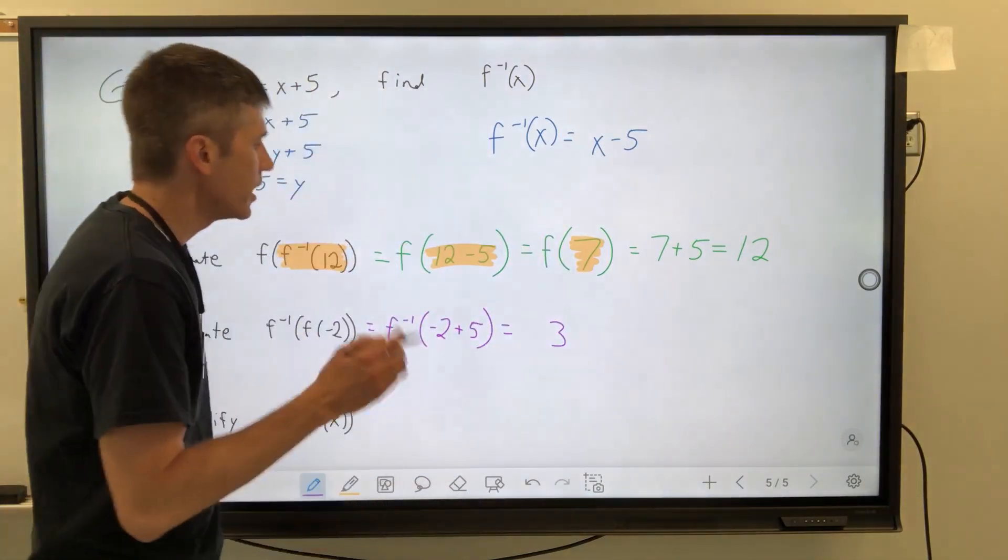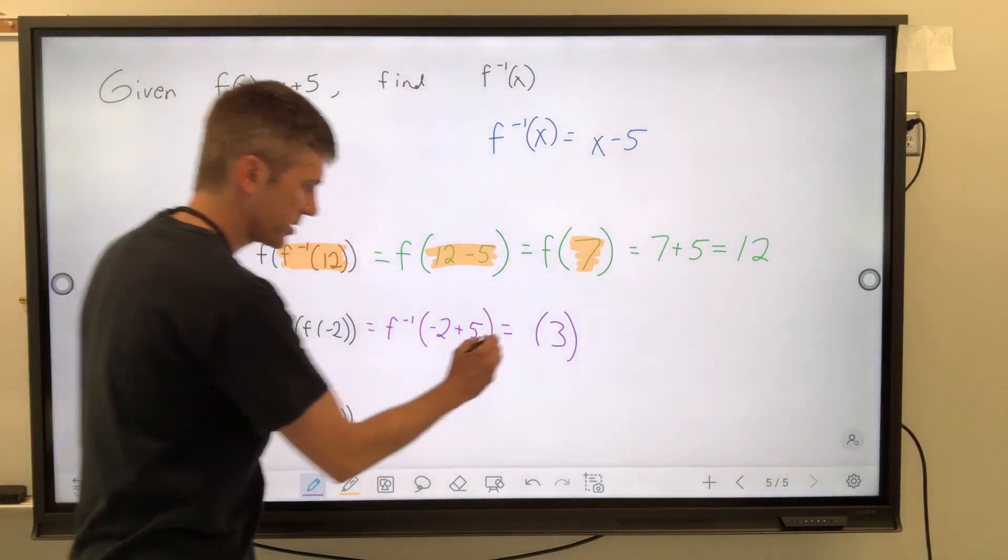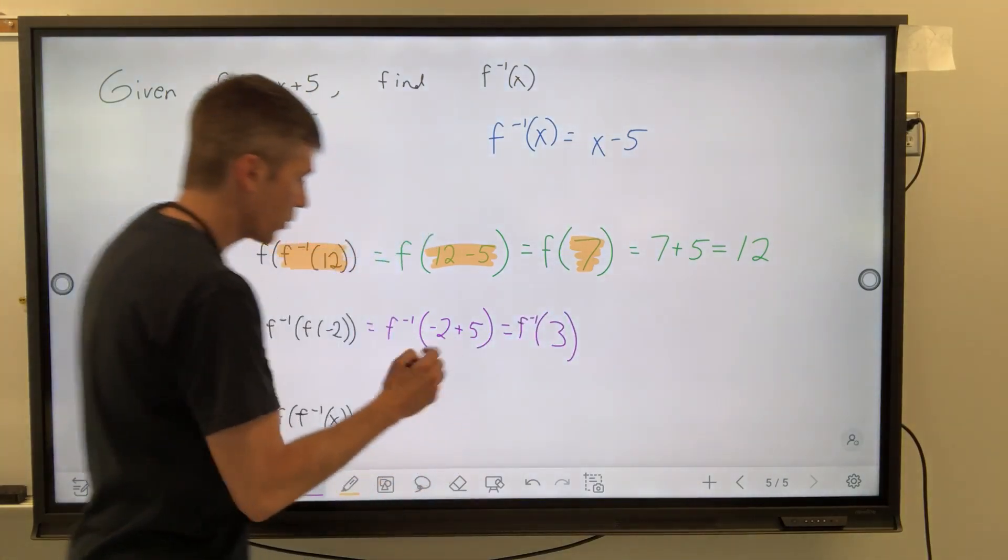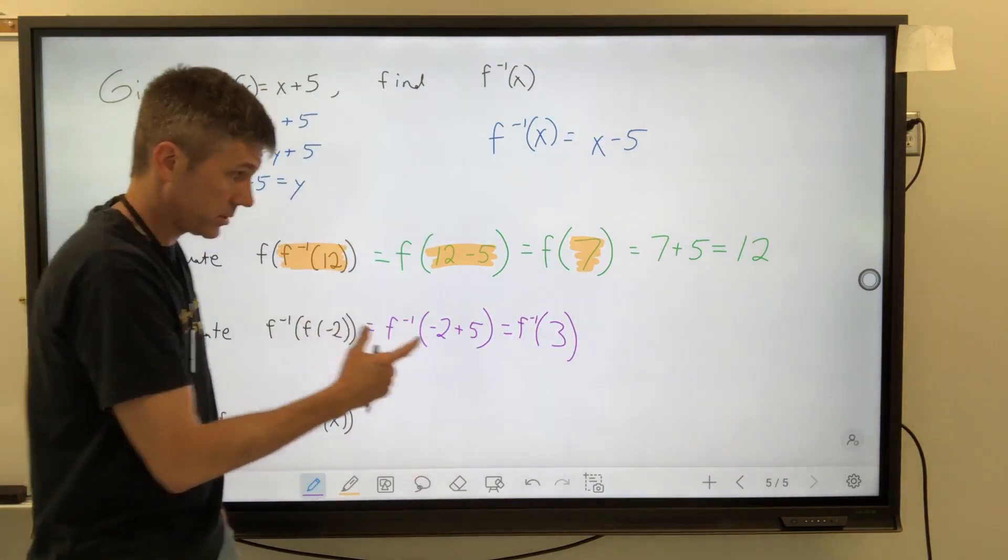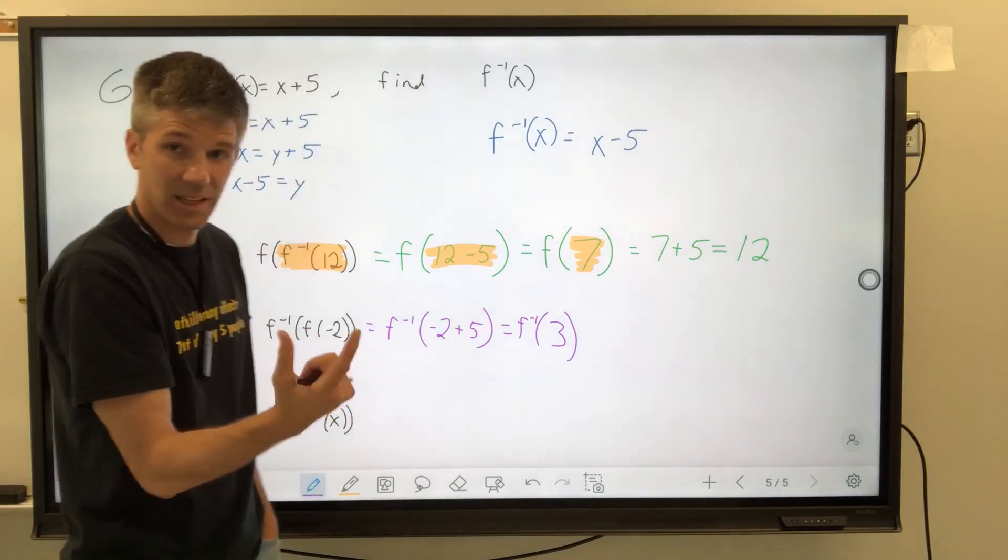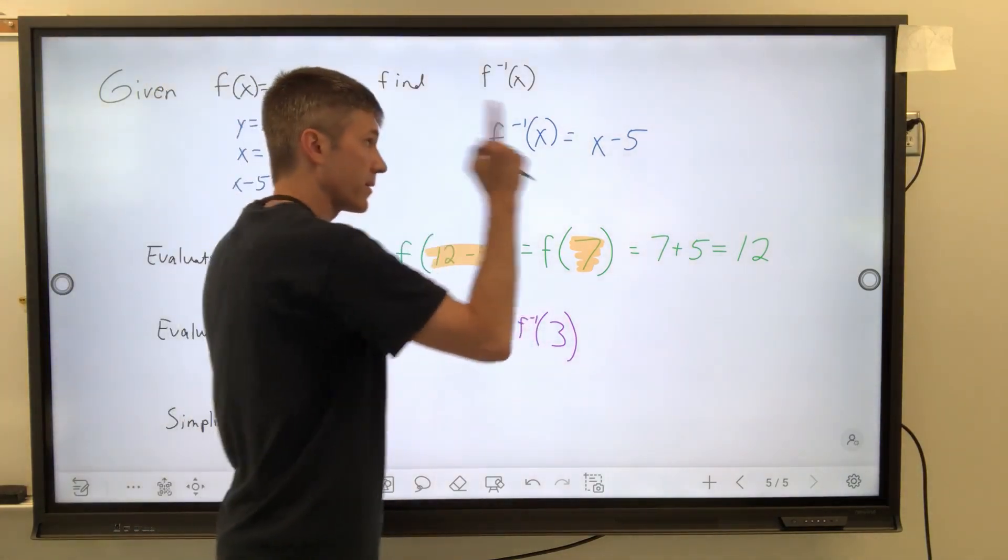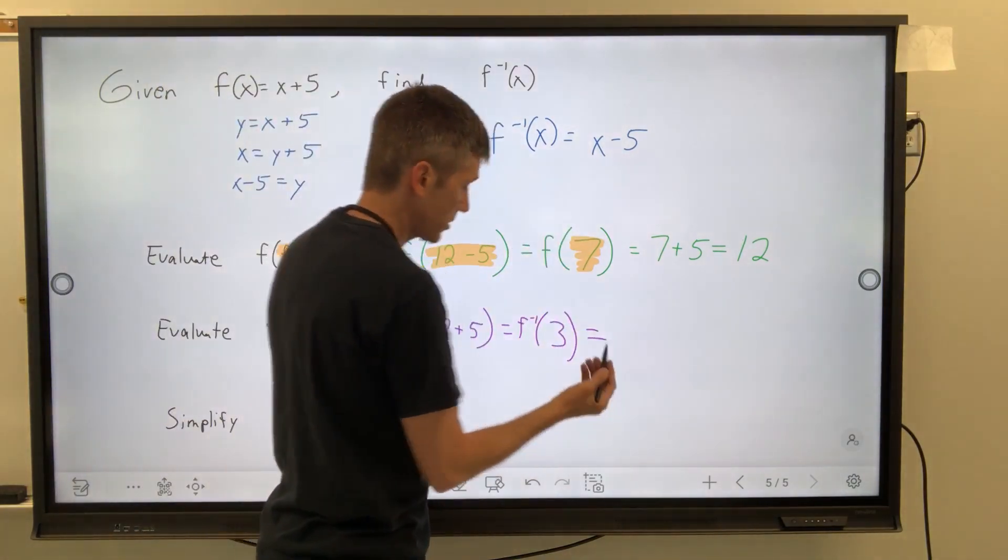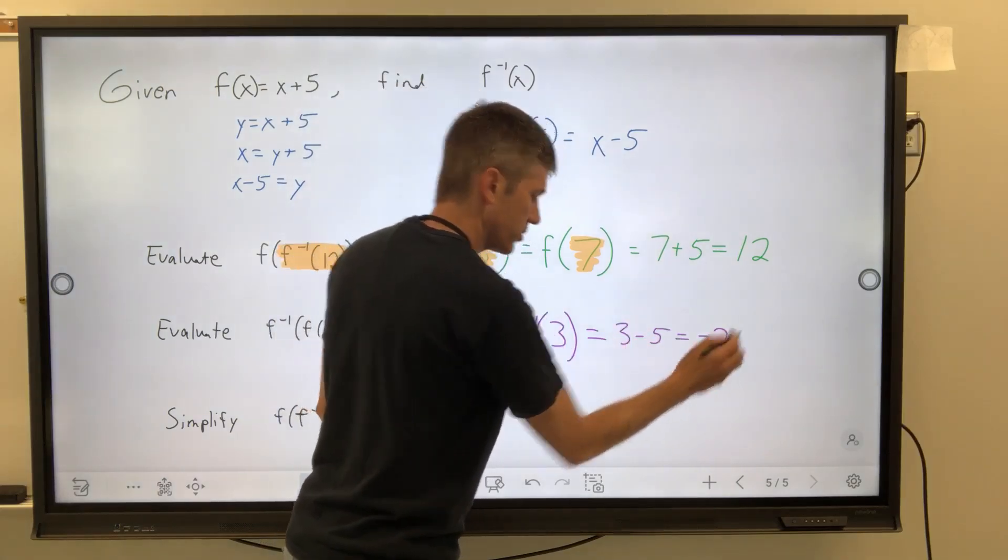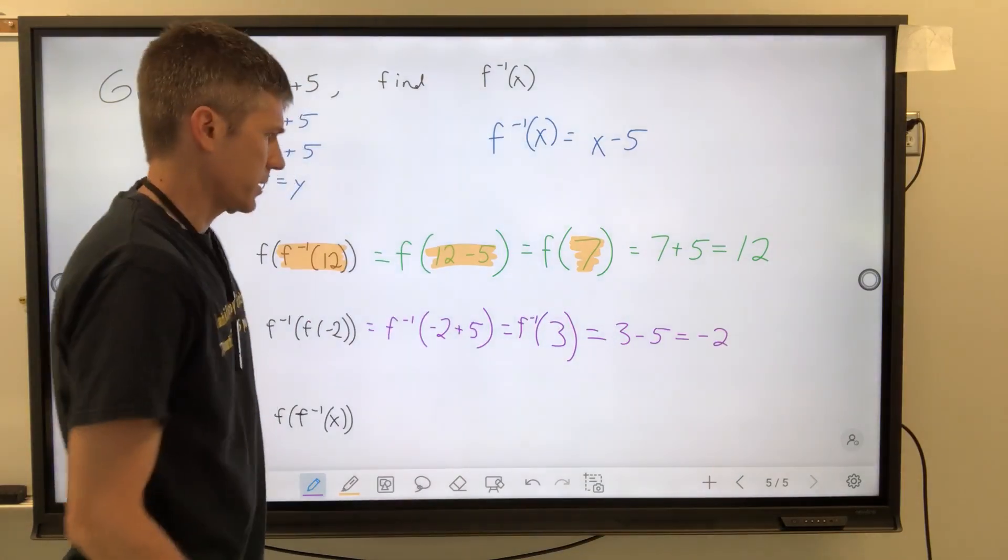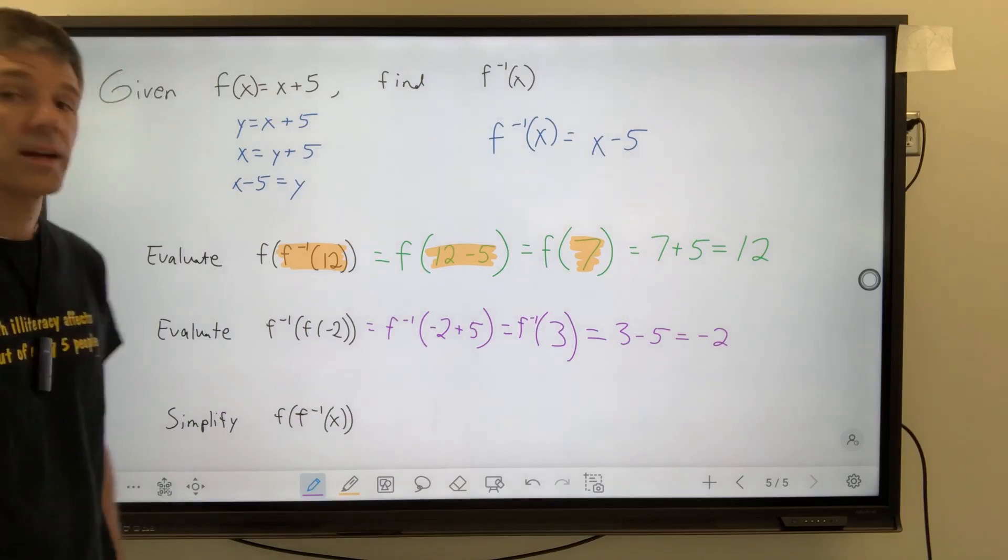And we're going to get 12. And then we stand off to the side and scratch our heads and say 12. That looks familiar. And then we move on to the next problem that will be written in purple. f inverse of f of negative 2. So what we're going to do is take a negative 2. We're going to plug it in to the f function.